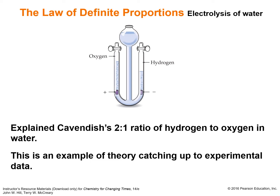Another example of the law of definite proportions is the electrolysis of water. In the apparatus, water in the center is separated by electricity into hydrogen gas and oxygen gas. This was demonstrated by Cavendish, showing that in water the hydrogen-to-oxygen ratio is 2:1. We know the formula of water is H₂O — two hydrogens per oxygen atom — and this is a classic example of theory catching up with experimental data.